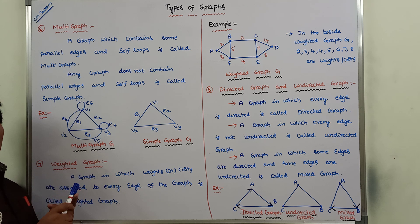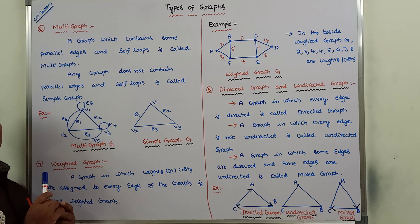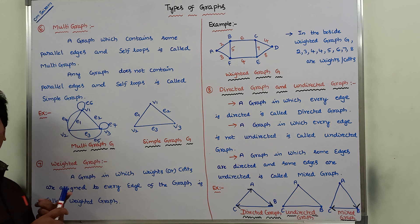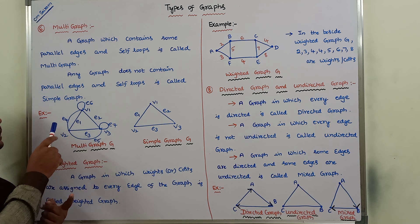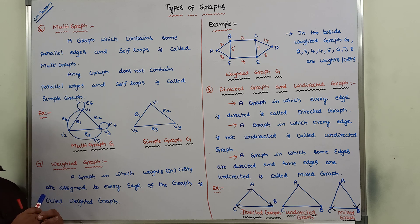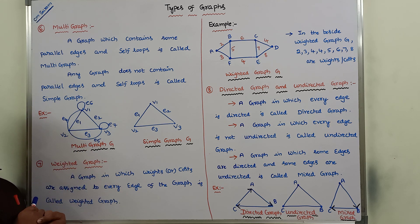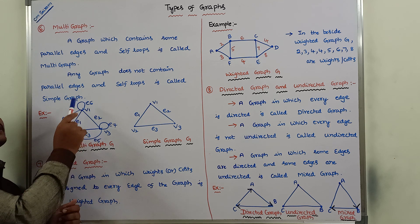Two edges are called as parallel edges when two vertices are connected by using those two edges. A vertex which is connected to the same vertex by using a single edge contains a self-loop. Any graph which contains some parallel edges and some self-loops is called as multi-graph. Hence, this graph is called as a multi-graph.